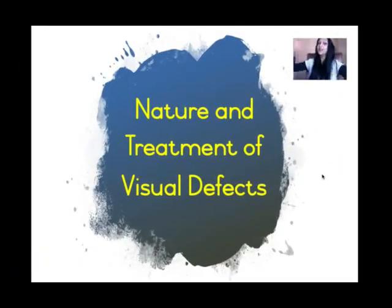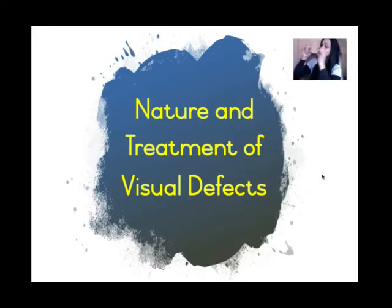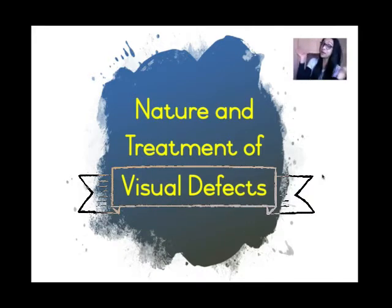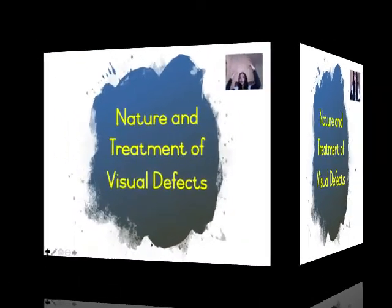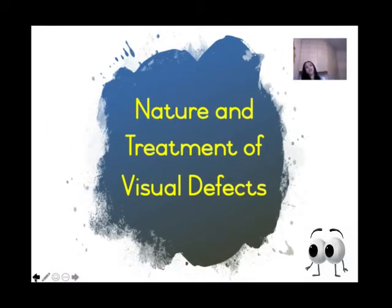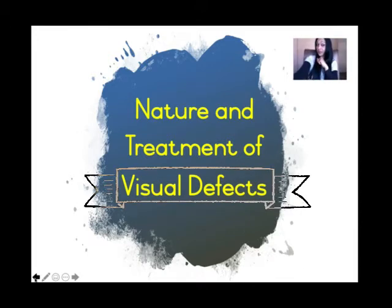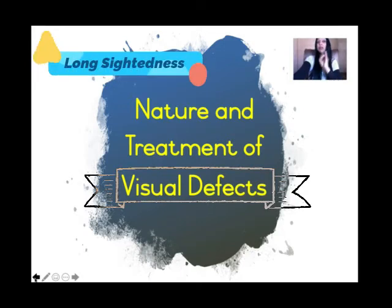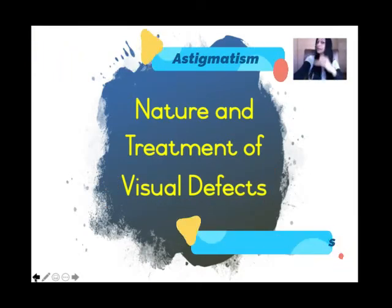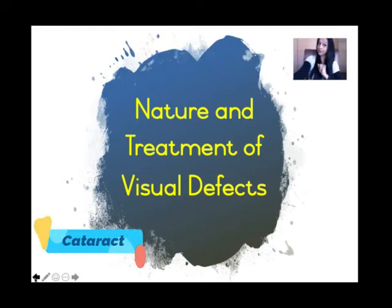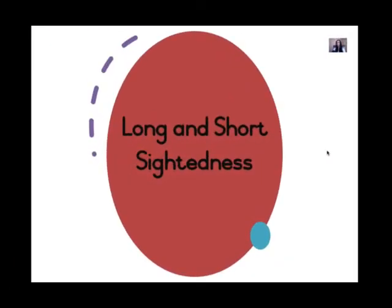Welcome, Grade 12s. Today we are moving on to the nature and treatment of visual defects. Have you noticed that some people have visual impairments? This means that their eyes do not function properly. The visual defects we will be discussing today are long-sightedness, short-sightedness, astigmatism, and cataract. Let's begin with long and short-sightedness.